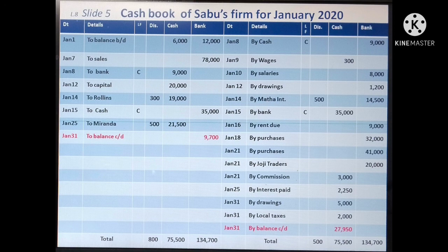The balance card is shown in the Cash Column, meaning the Cash debit side total is more, so the balance is shown on the credit side to make both sides equal. Now for posting from discount columns: the Discount Column on the debit side totals 800 — this is posted in Discount Allowed Account on the debit side as 'To Sundries 800.' The Discount Column on the credit side of Cash Book shows 500 — posted in Discount Received Account on the credit side as 'By Sundries 500.'